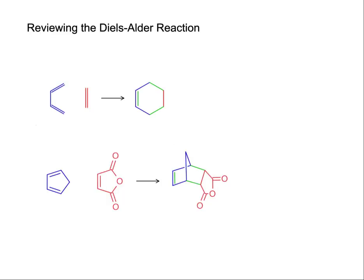The Diels-Alder reaction is itself pretty simple. All we need is a conjugated diene and a dienophile. A dienophile is usually just an alkene. The reaction is faster when you have electron withdrawing groups on the alkene because that makes the dienophile want electrons even more. The reaction is exothermic, but it's initiated with a little bit of heat. What happens is the dienophile attacks the conjugated diene. One of those pi bonds breaks and forms a new pi bond between the original conjugated diene double bonds, and then the other part of the conjugated diene goes and forms a new bond with the other side of the dienophile.